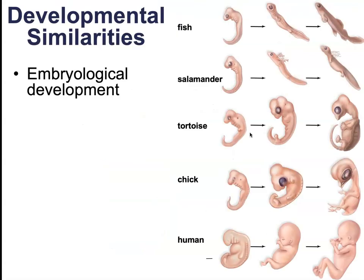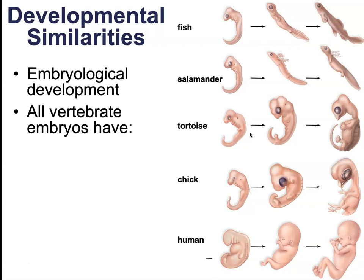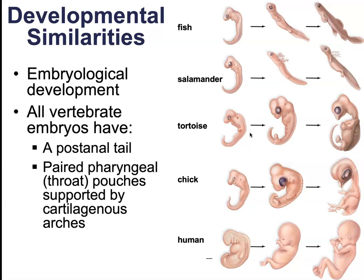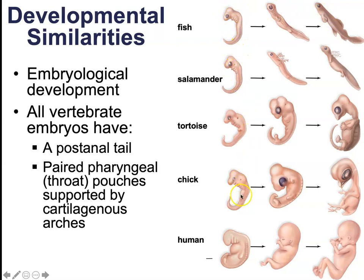There are also developmental similarities. Embryological development looks much the same for all vertebrate embryos. They all have a post-anal tail and paired pharyngeal throat pouches supported by cartilaginous arches. Whether we're looking at a human, chicken, tortoise, salamander, or fish, the initial embryological stages are very similar in shape and structure.